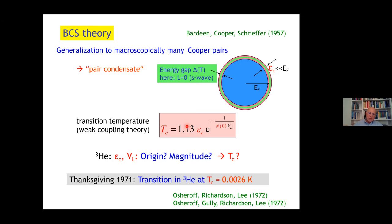So it was a great surprise when on Thanksgiving 1971, in an experiment that had nothing to do with superfluid helium-3, the transition was detected at the incredibly low temperature of 2.6 millikelvin by Osheroff, Richardson and Lee. They first thought it was a transition in the solid, then they found that it's actually coming from the liquid. That was the discovery of the superfluidity in helium-3.